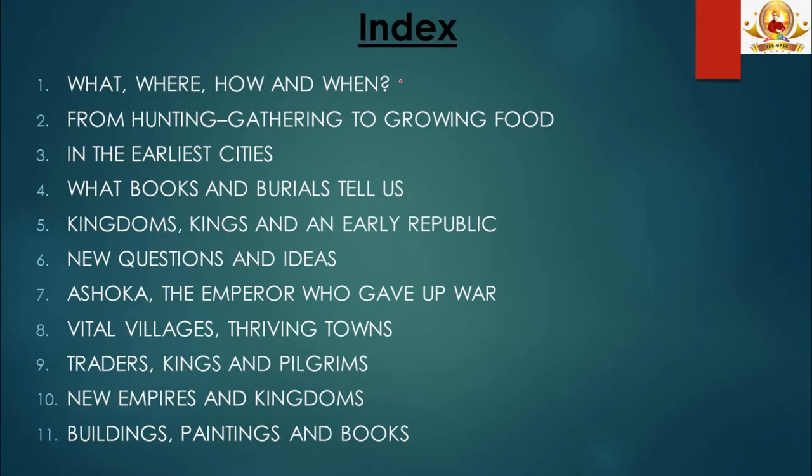Chapter 1, 'What, Where, How and When,' talks about the sources of ancient Indian history. The second chapter, 'From Hunting Gathering to Growing Food,' covers the stone ages. The third chapter, 'In the Earliest Cities,' talks about the Indus Valley Civilization. The fourth chapter, 'What Books and Burials Tell Us,' covers the Vedic age and megalithic culture.